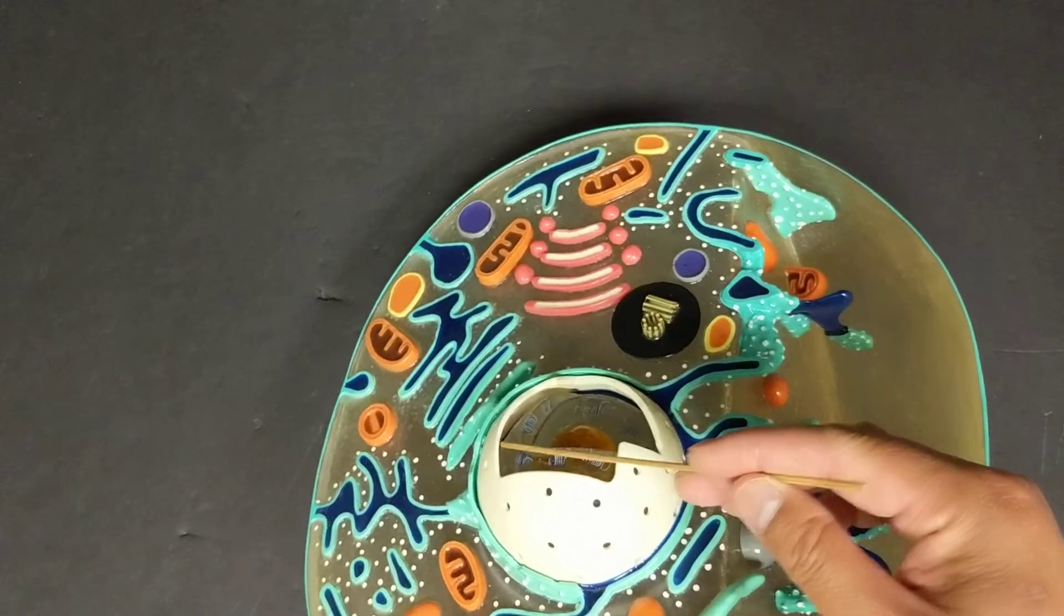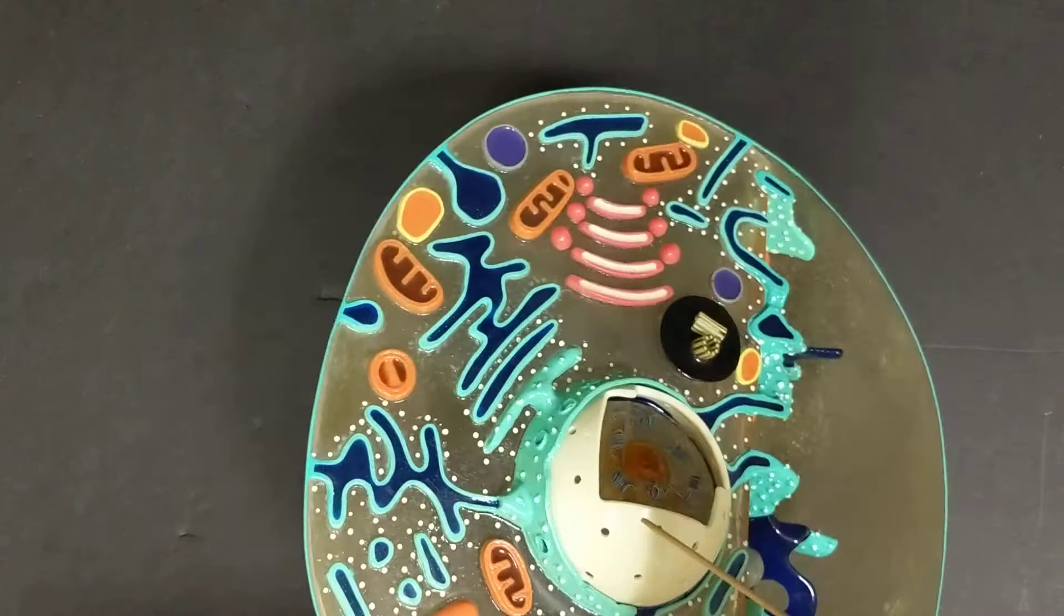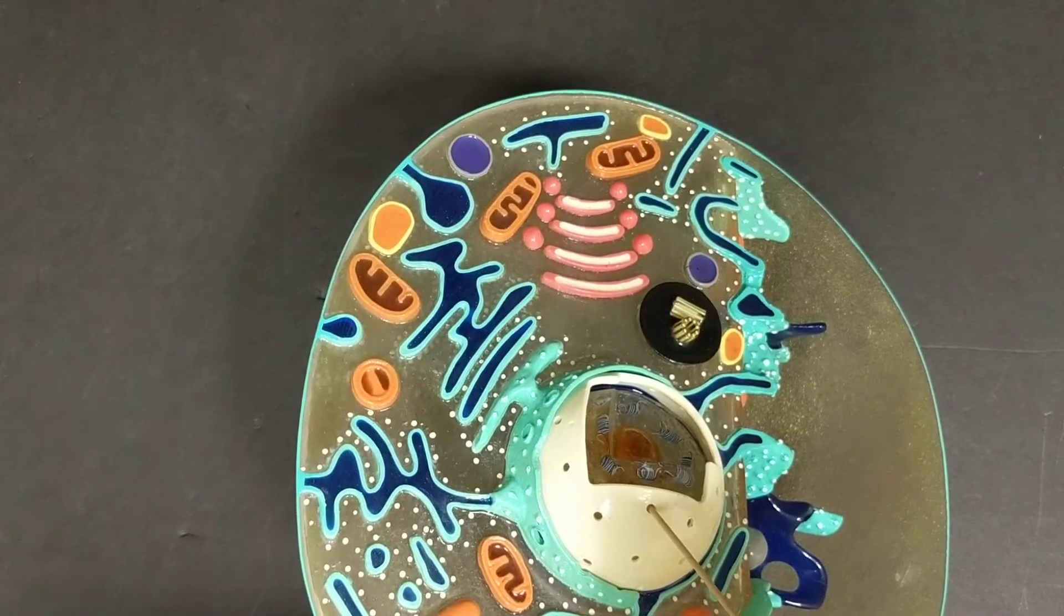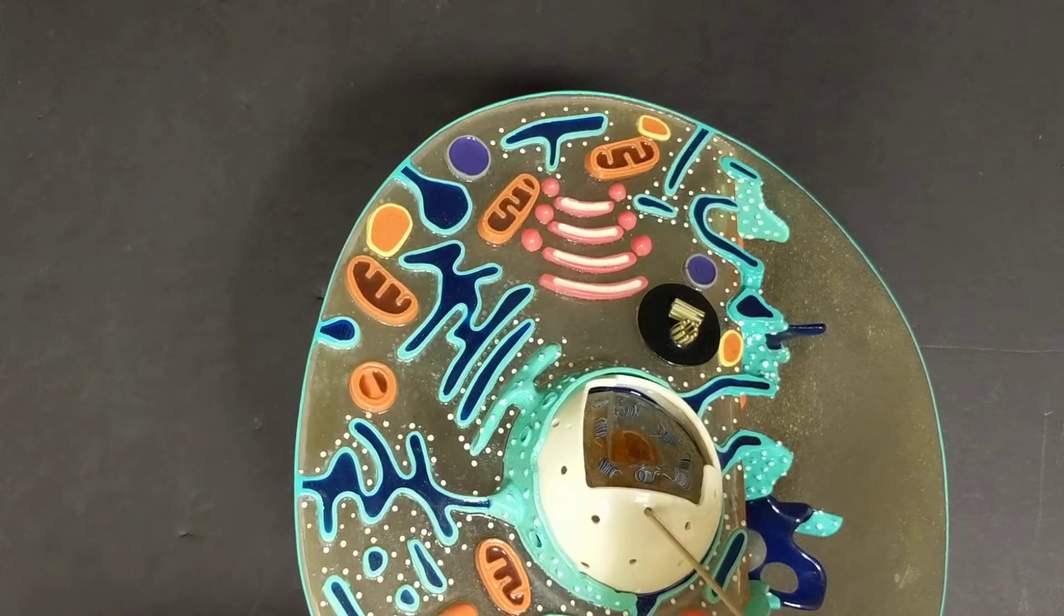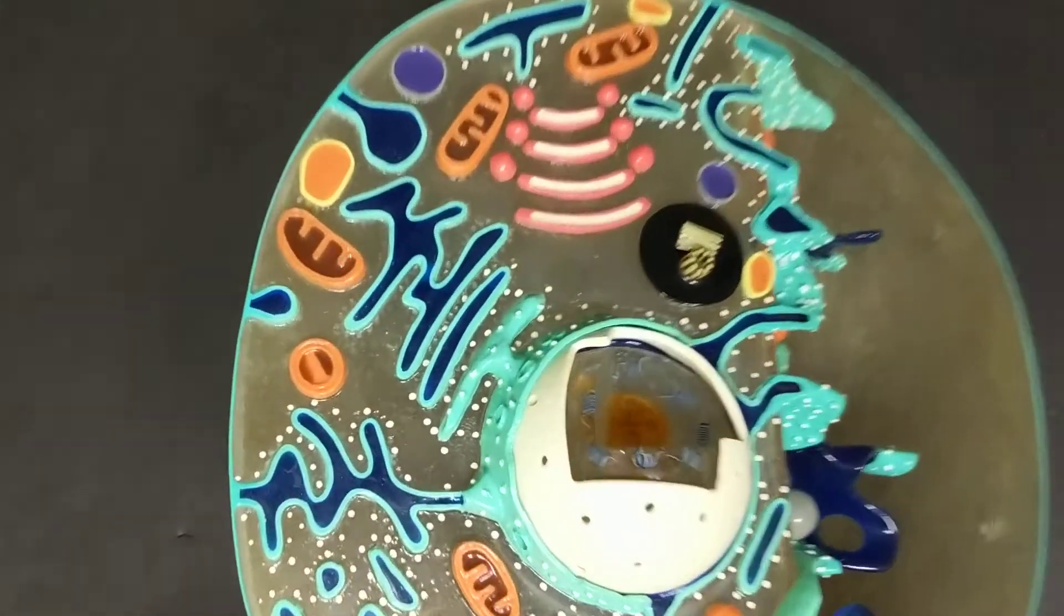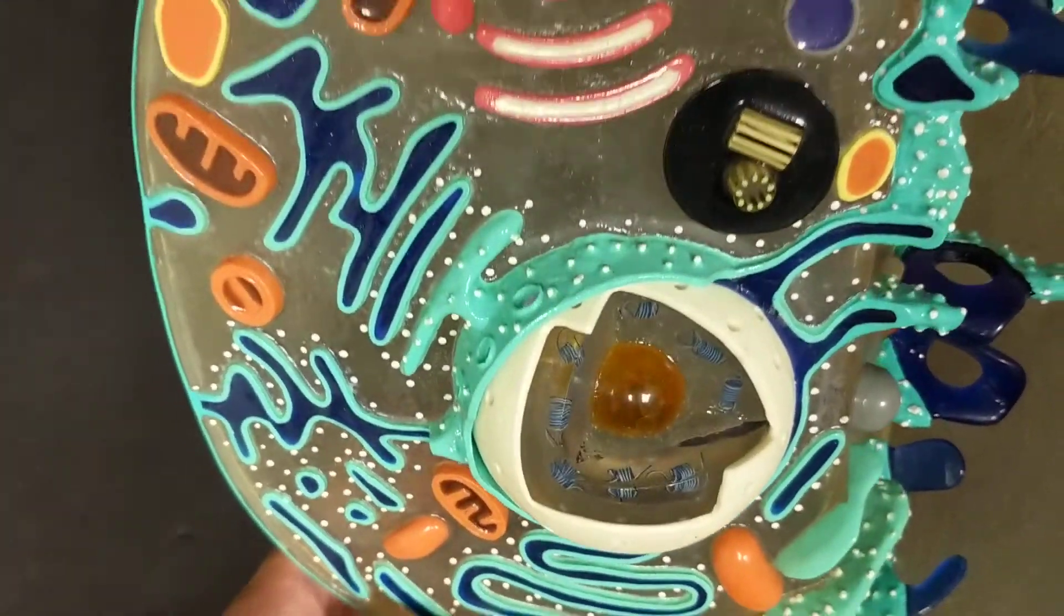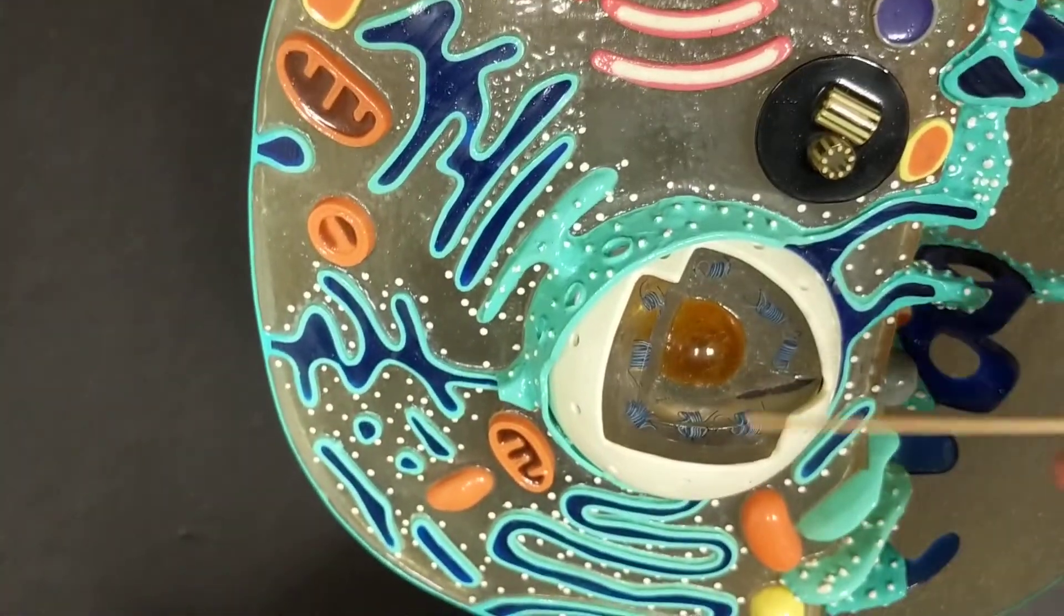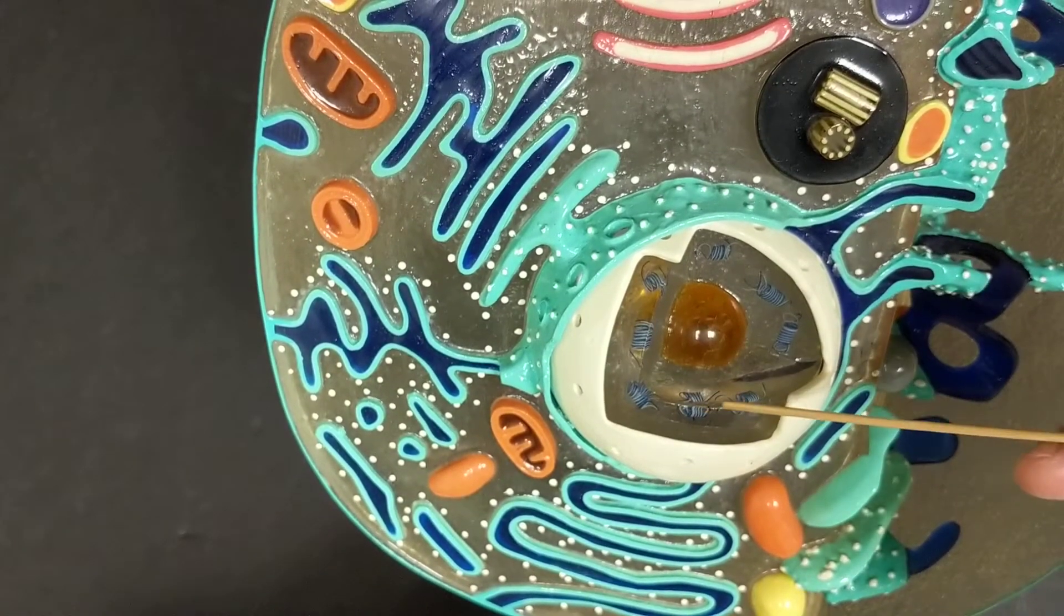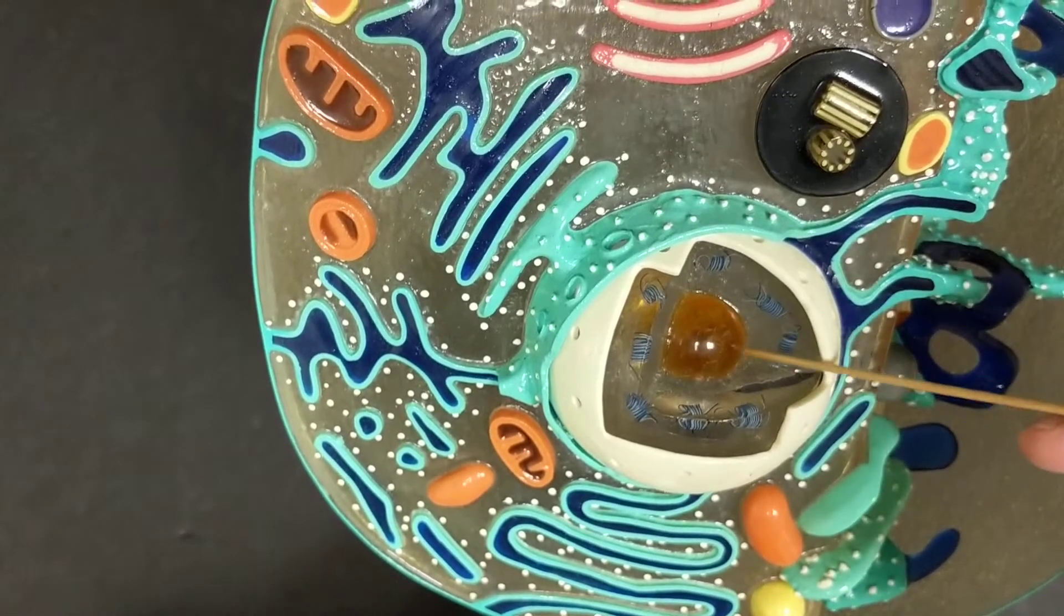The nuclear envelope has these little holes, the nuclear pores, through which things can go in and out of the nucleus. But inside of the nucleus, what do we see? We have the nucleolus, the orange sphere in the middle, as well as the chromatin.